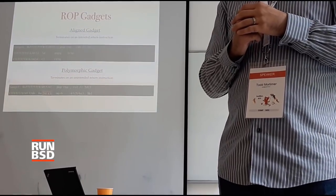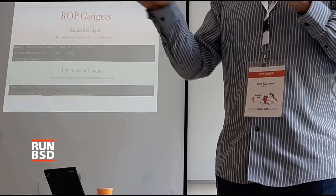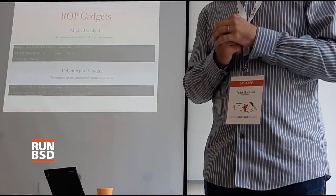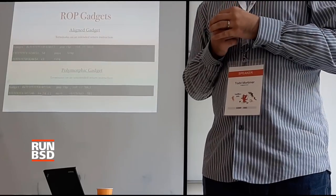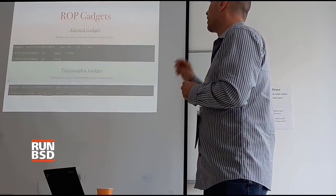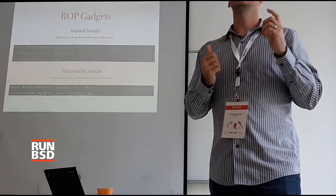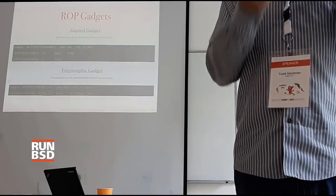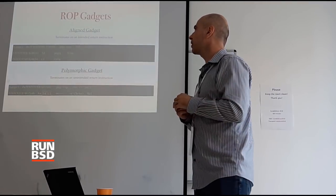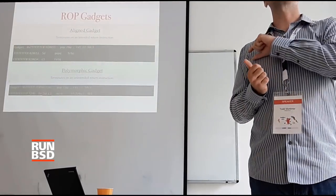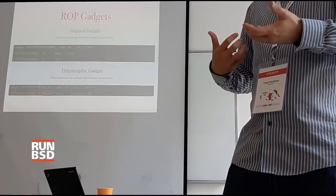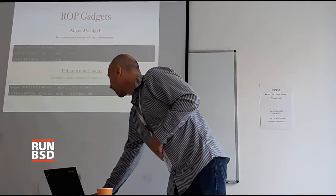I discovered ROP because of playing CTFs, which is all binary exploitation. When they start turning on W^X, stack canaries, NX and things like that, then you have to use ROP. So there's lots of tooling around ROP. An aligned gadget is a gadget that terminates on a real return — a return that's supposed to be there in the program. If you disassemble a program, you'll see the returns at the bottom of functions. A polymorphic gadget on x86 terminates on an unintended return instruction. If you jump into the middle of the instruction stream at some weird offset, you start disassembling from there and you actually get a RET at the bottom — almost always a C3 byte.